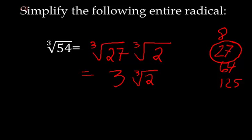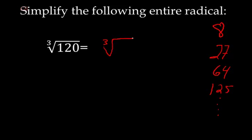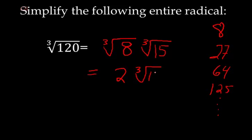One last example of a cube root, the cube root of 120. Once again, I'm looking for a perfect cube that divides in there. Those perfect cubes: 2 cubed was 8, 3 cubed was 27, 4 cubed was 64, 5 cubed 125. As it turns out, 120 is divisible by 8. In fact, 120 is exactly equal to 8 times 15. I've jumped ahead and broken it down into two different radicals. Cube root 8 is 2, and cube root 15 is cube root 15.